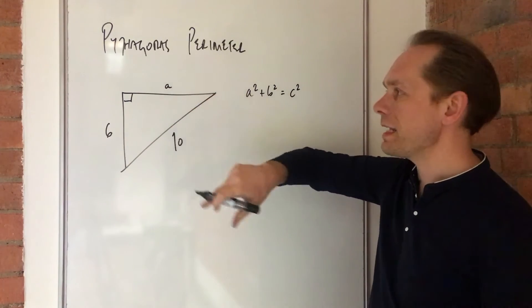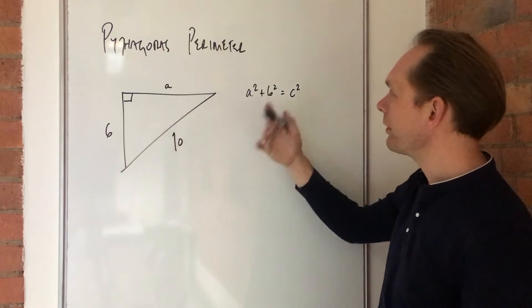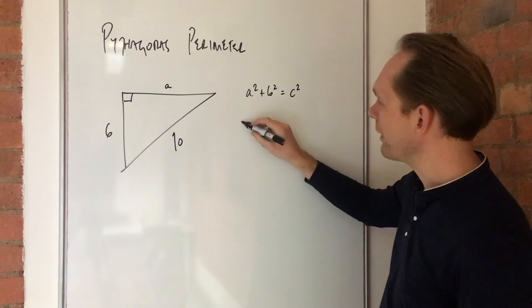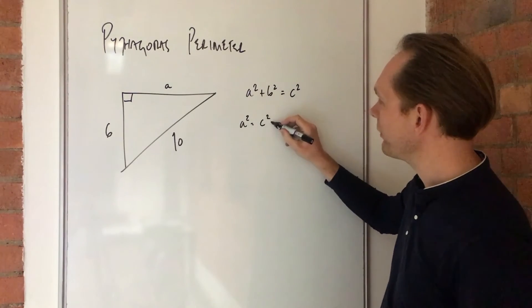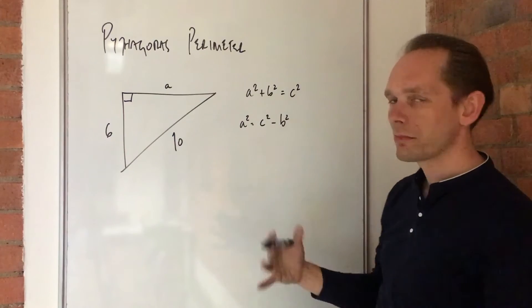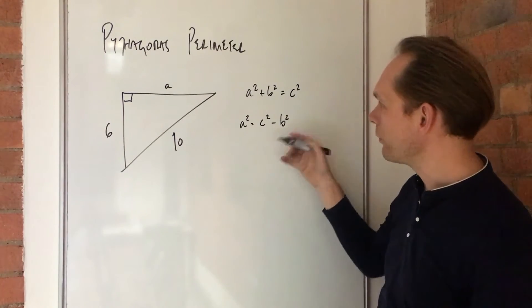And we want to know what this a is before we can do anything with it. So let's rearrange it first to say a squared equals c squared minus b squared. Hopefully that's all fairly straightforward for you.